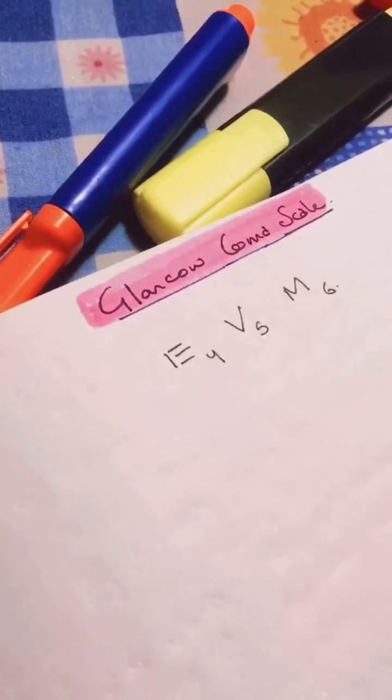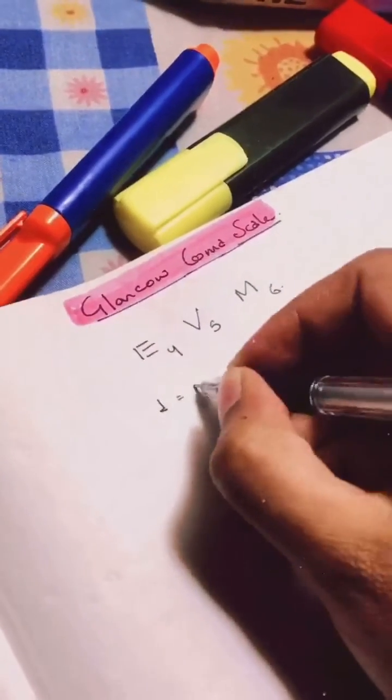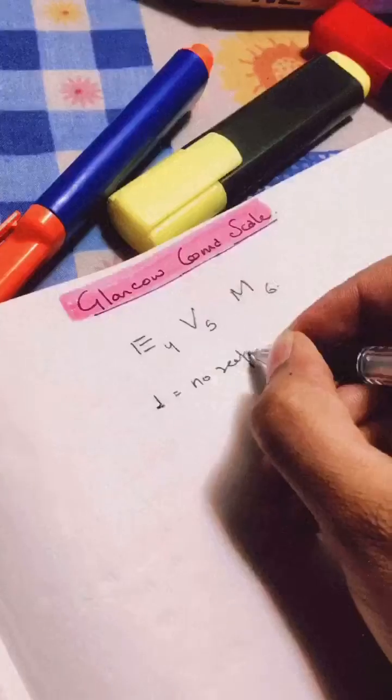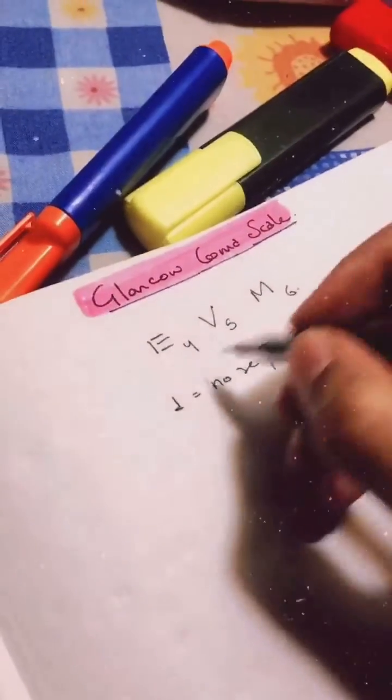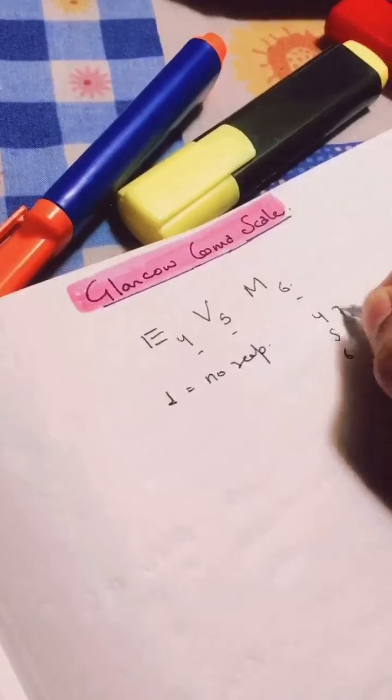Rule number three: the minimum value, which would be one, is no response. Correct. And the maximum value here - four, five, and six - because the four, five, and six is normal.